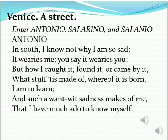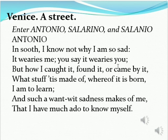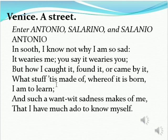"It" refers to the sorrow of Antonio. "It wearies me" — Antonio wants to say that he is tired of his sorrow, tired of his sadness. "And you say" — you refers to the friends of Antonio. He tells his friends that you all are telling me you are tired by my sadness; I myself am tired of it. But how I caught it — how I found my sorrow, or how I acquired it — what stuff, what material my sorrow is made up of, whereof it is born means what is the origin of this sorrow. "I am to learn" means I am yet to know.